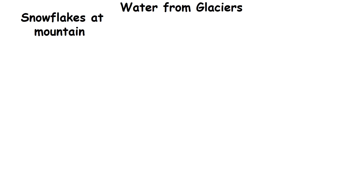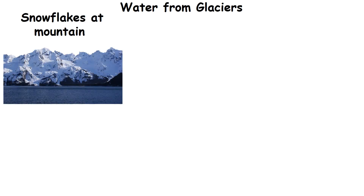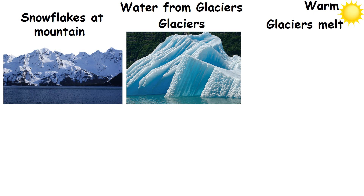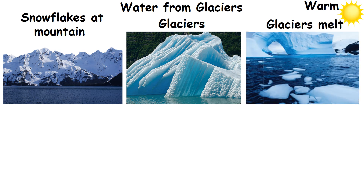Water from glaciers. Snowflakes build up at the top of a mountain and gradually get compacted and turn to ice, known as glaciers. It is a slow-moving block of ice. When the weather becomes warm, glaciers melt and water drops begin to flow from the snowy mountains.